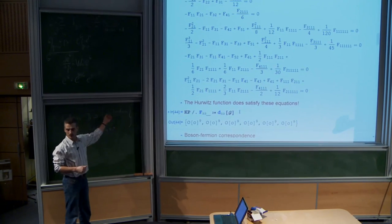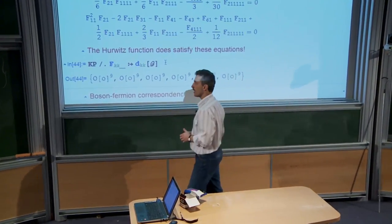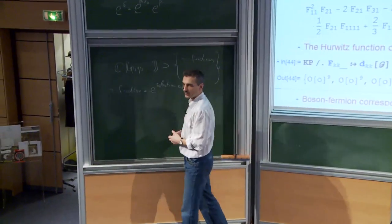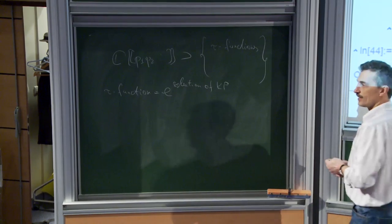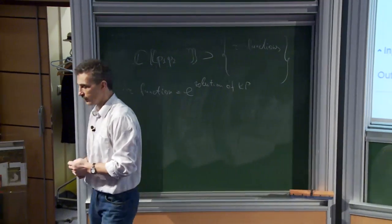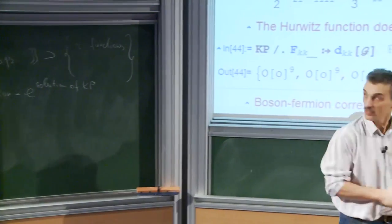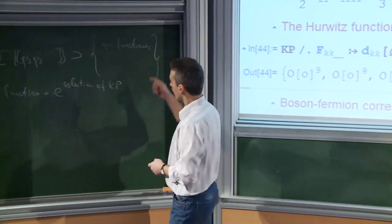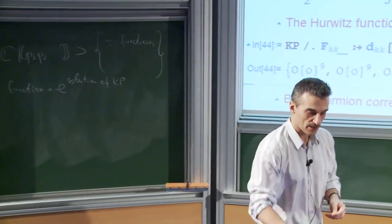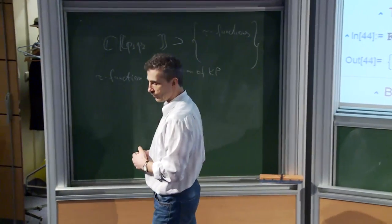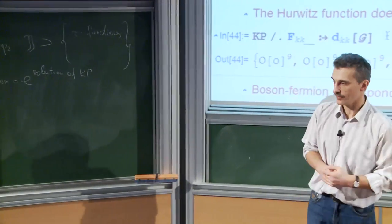When you work with Grassmannians, you know how to treat them: how to take planes, move them, understand their geometric behavior. You know they satisfy Plücker equations, and most mathematicians are aware of their existence, but few could write down the explicit form. Nevertheless, you can work with Grassmannians without knowing the explicit Plücker equations. The equations themselves are secondary. What matters is the space of solutions.